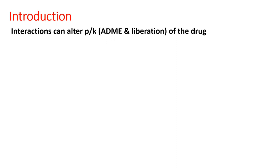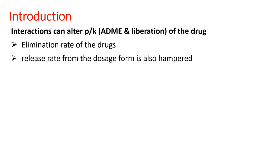There are two kinds of interactions basically. First are interactions that can change the pharmacokinetics of the drug — that is absorption, distribution, metabolism, and elimination or excretion, or even liberation of the drug. The elimination rate of certain drugs has been found to be affected by co-administration of certain herbal drugs — it can either be increased or decreased. Similarly, the release of a drug from its dosage form can either be increased or decreased in presence of certain herbal drugs.